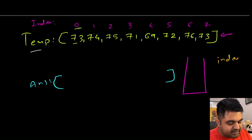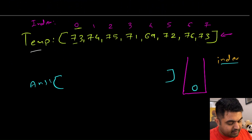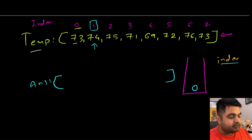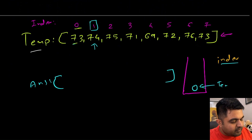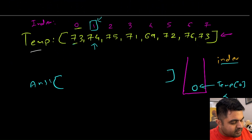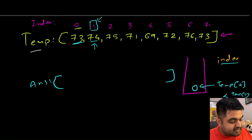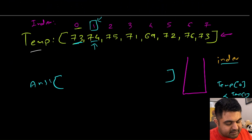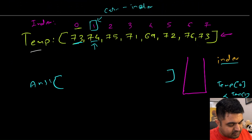Currently we are at index 0, value 73. The stack is empty, so we add index 0 to the stack. Now we move to index 1, value 74. We check whether the value at the top of the stack — temp[0] = 73 — is less than the current value, temp[1] = 74. The condition is correct, so index 0 gets popped. We mark the answer for index 0 by doing the subtraction: current index 1 minus popped index 0, giving answer 1.